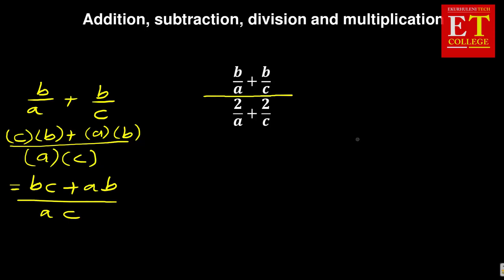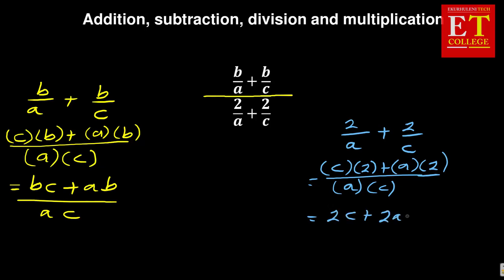Also, when we've gotten the first part, on the other extreme end, I'm going to write the second one, which is two over a plus two over c. Again, my common denominator is a and c. My a will cancel to remain with c, and c will multiply the top part, which is two, plus the c cancels, I've got my a multiplying the two. If I simplify this, I've got two c plus two a all over a c.